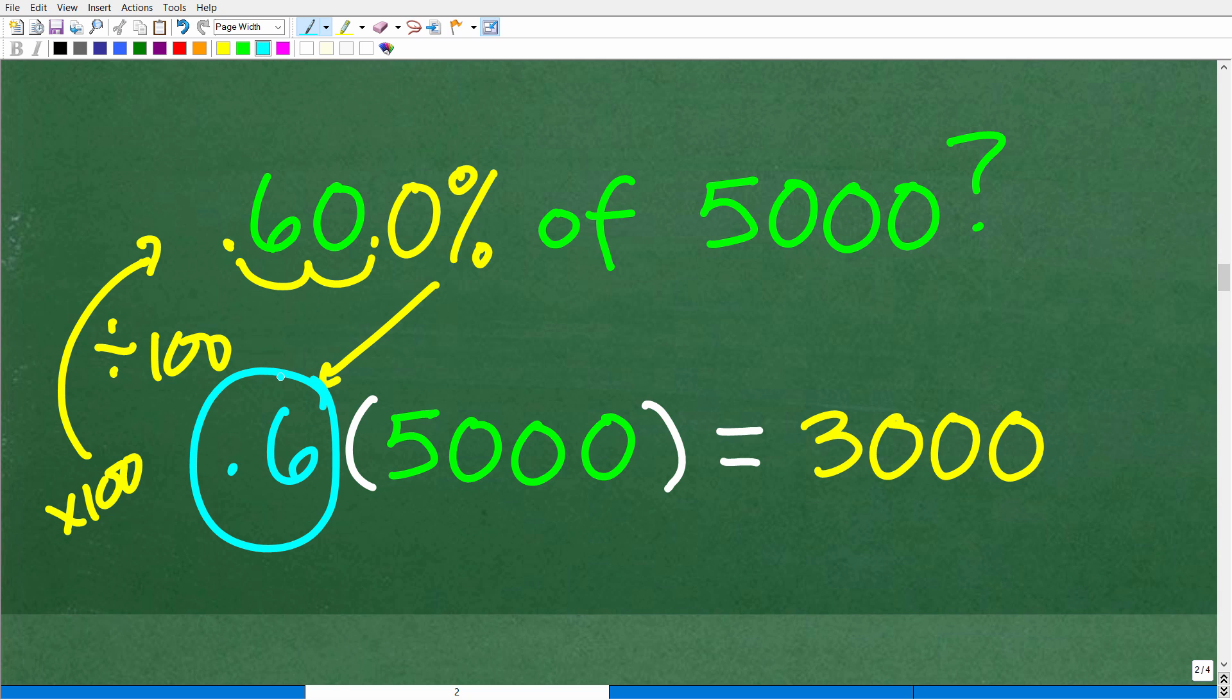Okay. So, 60% is 0.6. And, we need to write that percent as a decimal. So, 60% again is 0.6. And, then just simply multiply by the number. So, 0.6 times 5,000 is 3,000. 0.6 times 5,000 is 3,000. Pretty simple math.